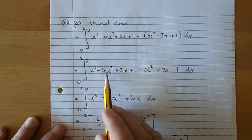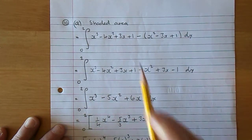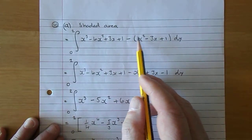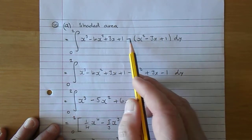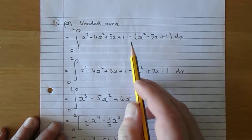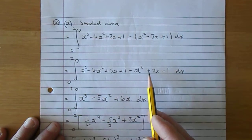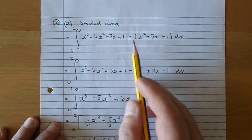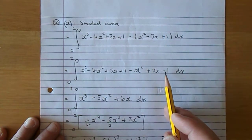We can now tidy this up. X cubed takes 4x squared plus 3x plus 1 stays the same. Now we're going to put the negative through these three things. So negative x squared, now be careful, negative negative is a plus, so that's going to be plus 3x. Negative plus is a negative, so that's just going to be minus 1.